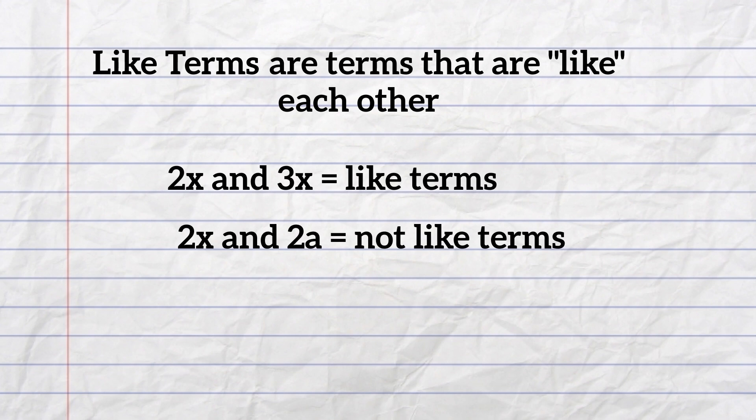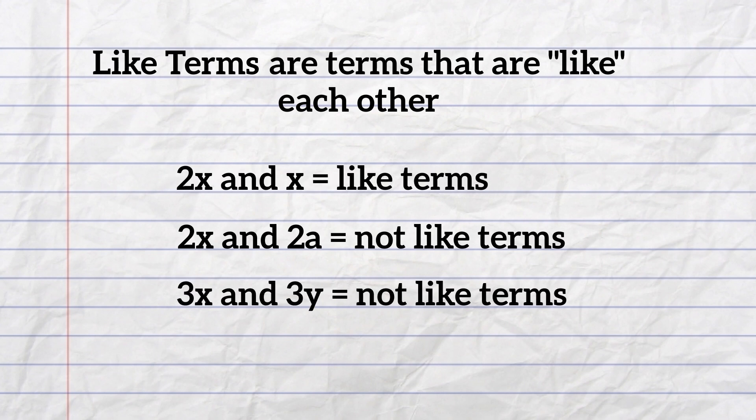2x and 2a are not because the variables x and a are not like terms. In the same way, 3x and 3y are not like terms. So let's get back to solving the problem.